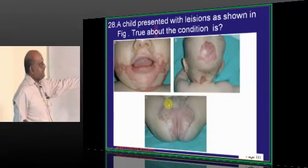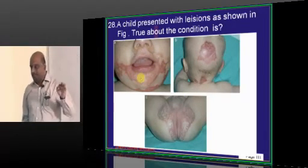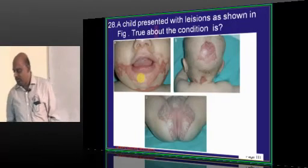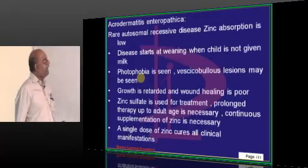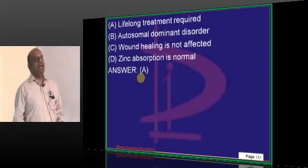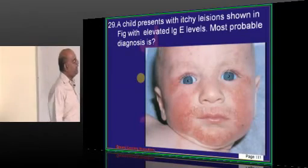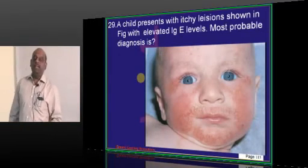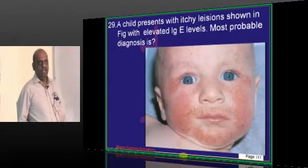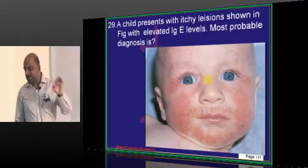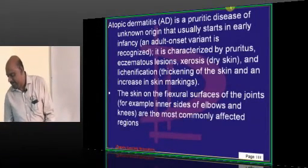The child has acral and perioral lesions. What is this entity called? Acrodermatitis enteropathica, which is an autosomal recessive disorder with zinc malabsorption — these patients require lifelong treatment with zinc. There are elevated IgE levels in a baby with itchy lesions — atopic dermatitis is what you need to basically remember.